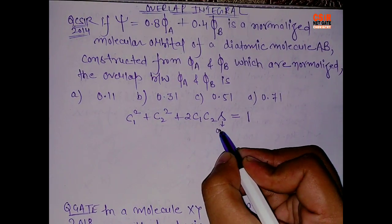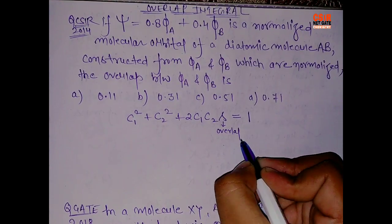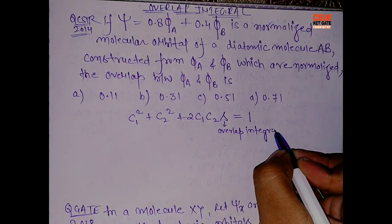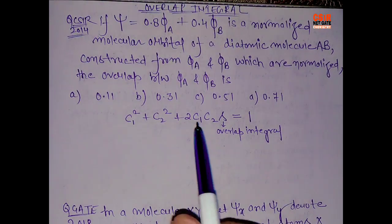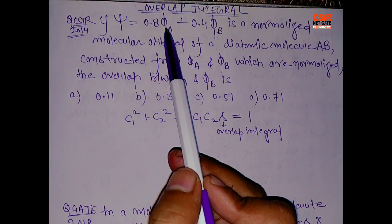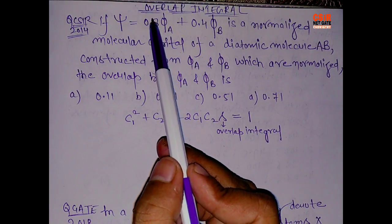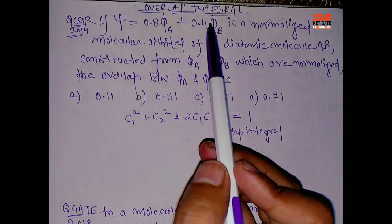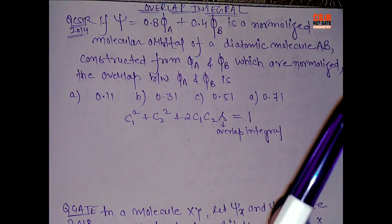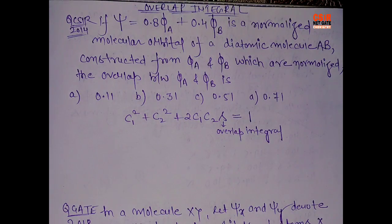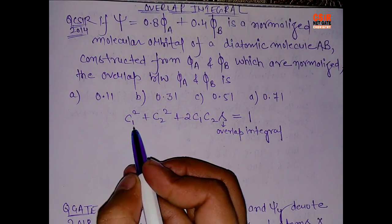So see, what is c1? c1 is for the first function psi a, so it is 0.8. And c2 is for the second wave function, alright?